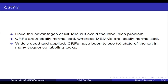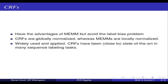CRFs are very widely used and were very close to state-of-the-art for many sequence labeling tasks, from part-of-speech tagging to named entity recognition. You can apply a conditional random field model to any sequence labeling task. Many libraries are available: Mallet is one popular library, and there are also CRF++ and many others. What is important is understanding what features you need to use, and then the model will help you train your own CRF.